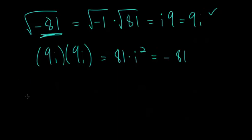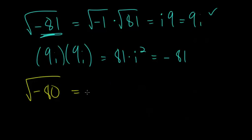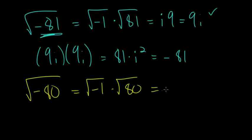You could also have a scenario like the square root of minus 80, where it doesn't have a nice clean square root. We follow the same process, pulling out the square root of negative 1, or i. So we have i times the square root of 80, and now it's just a question of how to simplify the square root of 80.